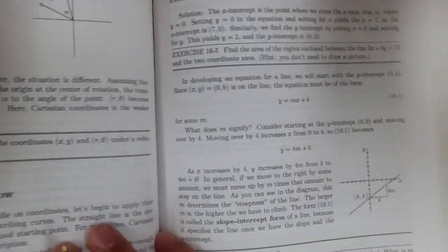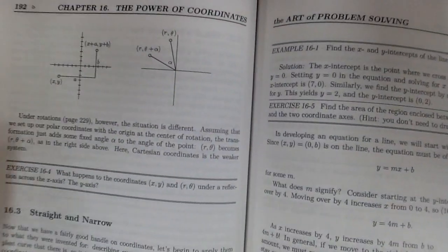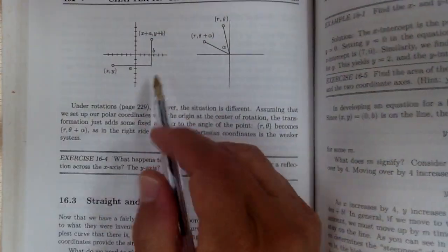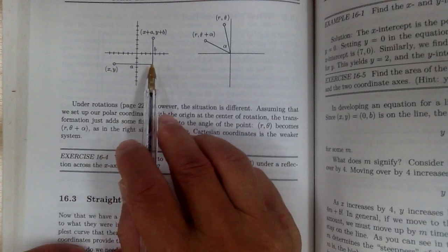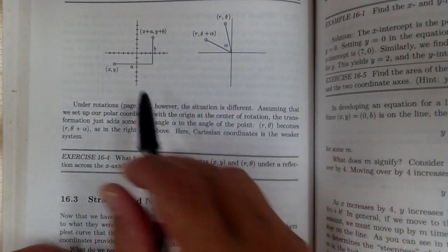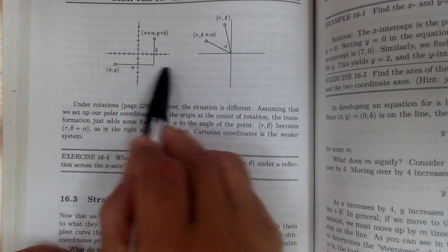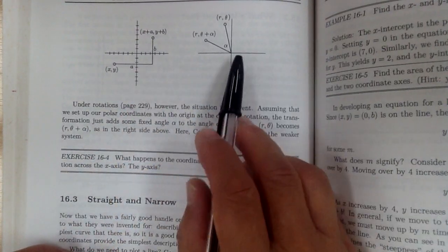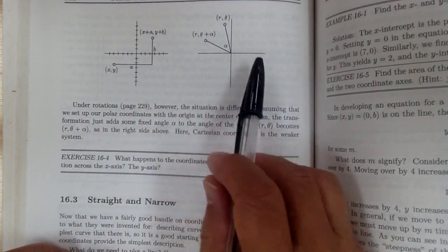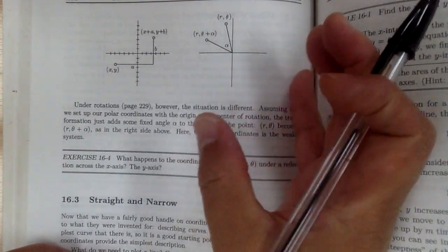For example, like over here, Cartesian coordinates are better to use when you have translation, when you slide things over, whereas polar coordinates are a better system when you have rotation.